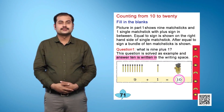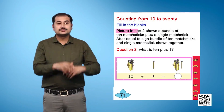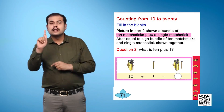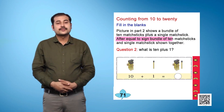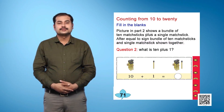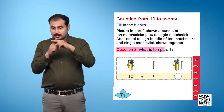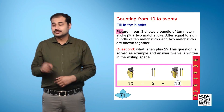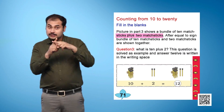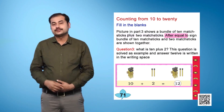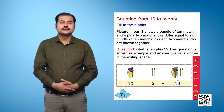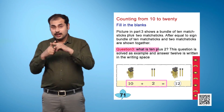The answer 10 is written in the writing space. Picture in Part 2 shows a bundle of 10 matchsticks plus a single matchstick. After the equal to sign, the bundle of 10 matchsticks and single matchstick are shown together. Question 2: What is 10 plus 1? Picture in Part 3 shows a bundle of 10 matchsticks plus a single matchstick. After the equal to sign, the bundle of 10 matchsticks and 2 matchsticks are shown together.